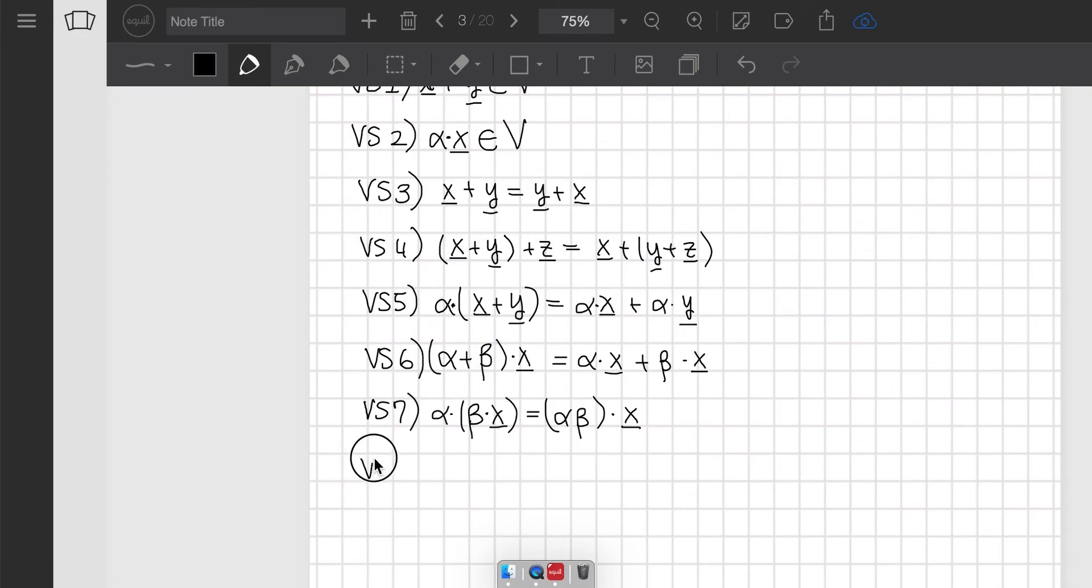And then we have a couple more. VS8 states that there must exist this special vector called the zero vector belonging to the vector space V, such that x plus zero is equal to x. So whatever vector you take, if you sum it to zero, to the zero vector, it gives the initial vector.